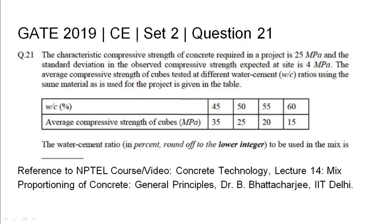GATE 2019 Civil Engineering Set 2, Question 21. The characteristic compressive strength of concrete required in a project is 25 MPa, and the standard deviation in the observed compressive strength expected at site is 4 MPa. The average compressive strength of cubes tested at different water-cement ratios using the same material is given in a table. The water-cement ratio to be used in the mix needs to be found, rounded off to the lower integer.